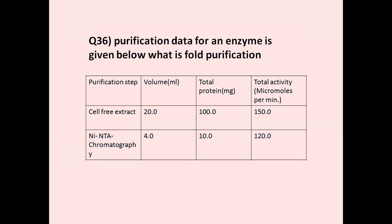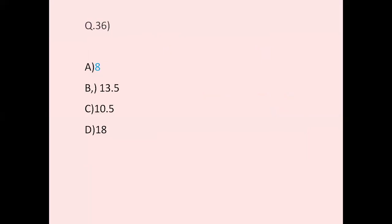Question number 36: The purification data for an enzyme is given. The question asks how to calculate the purification using the formula with values for purification step, volume in ml, total protein in milligrams, and total activity in micromoles per minute. The correct answer is option A, 8.